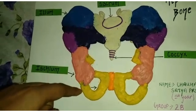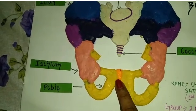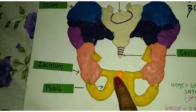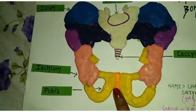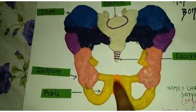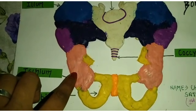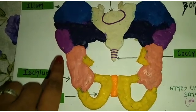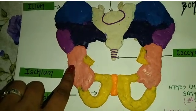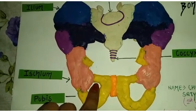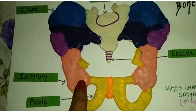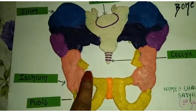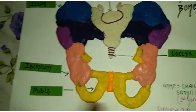Next is the pubic symphysis — it is a single cartilage joint present between the two coxal bones and is very flexible, more so in females than in males. The acetabulum is a hollow-shaped structure that attaches through different cartilage, muscles, and tendons. The obturator foramen is a space in this pelvic girdle through which blood vessels pass.